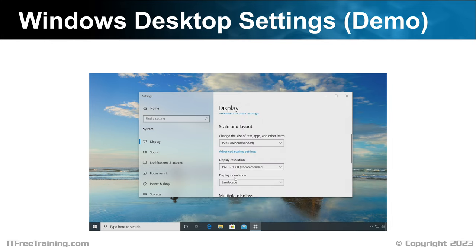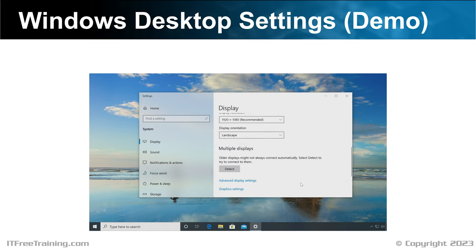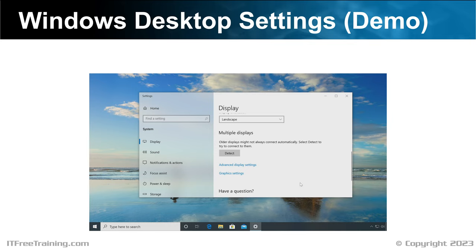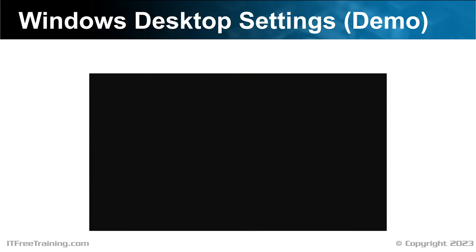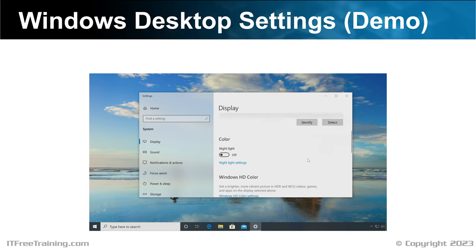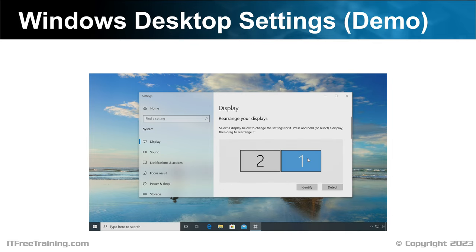The next option down is Display Orientation. This option allows you to change your monitor from landscape to portrait. You can also flip the image if you need to. Going down to the bottom, you will notice the section for multiple displays. On this computer, I have two displays. Windows is currently showing only one of these displays, so in order to get the other display working, I will press the Detect button. Hopefully, Windows will be able to detect the second display. You will notice that when I scroll up, the second display will now appear. If you are having trouble getting the second display working, you may need to restart the computer. Some displays will not work correctly unless the computer is started up with the display connected.